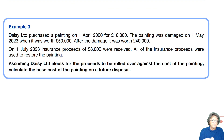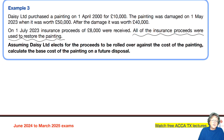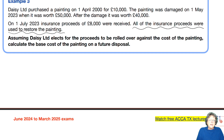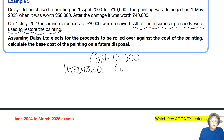Example number three: Daisy Limited purchased a painting on the 1st of April for £10,000. The painting was damaged when it was worth £50,000; after the damage it was worth £40,000. On the 1st of July 2023, insurance proceeds of £8,000 were received and were all used in restoring the painting. She has elected for the proceeds to be rolled over against the cost of the painting, so we need to work out the base cost. If you've done the rollover chapter you'll understand what that means. The original cost was £10,000; the insurance received was £8,000. Because somebody has to pay the tax on that at some point, the base cost is £2,000.